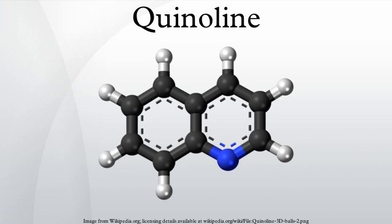Gould-Jacobs reaction starting from an aniline and ethyl ethoxymethylenemalonate; Skraup synthesis using ferrous sulfate, glycerol, aniline, nitrobenzene, and sulfuric acid. A number of other processes exist which require specifically substituted anilines or related compounds: Camps quinoline synthesis utilizing an O-acylaminoacetophenone and hydroxide; Friedländer synthesis using 2-aminobenzaldehyde and an aldehyde.